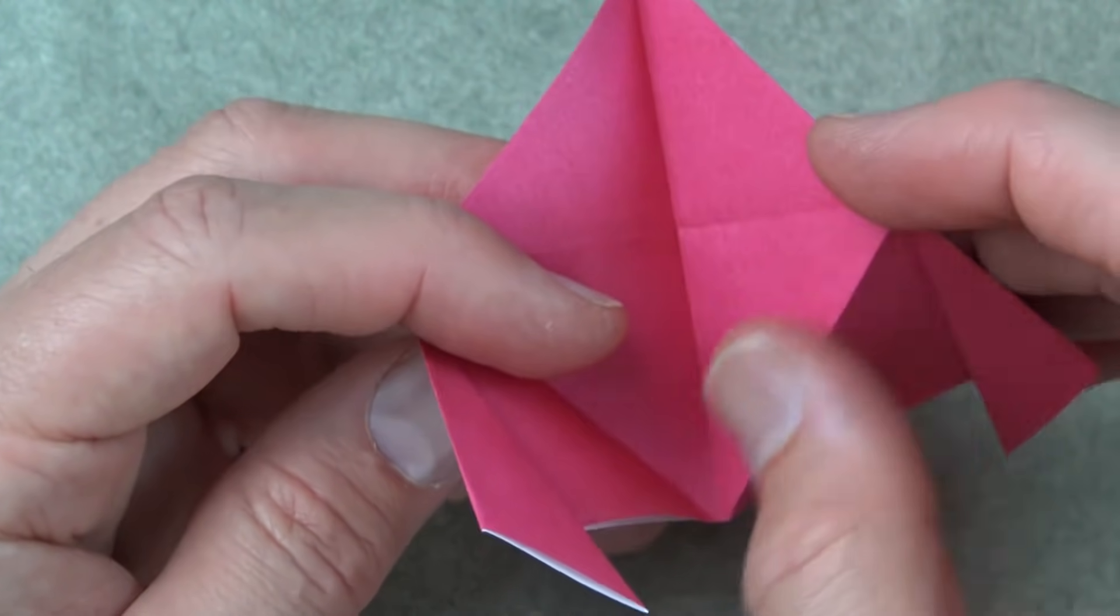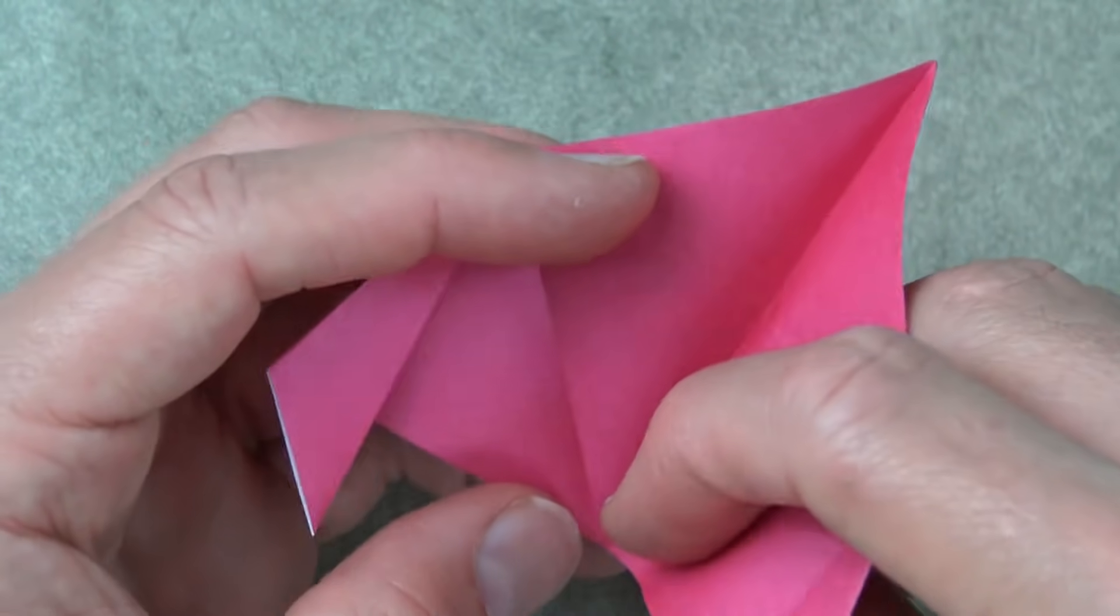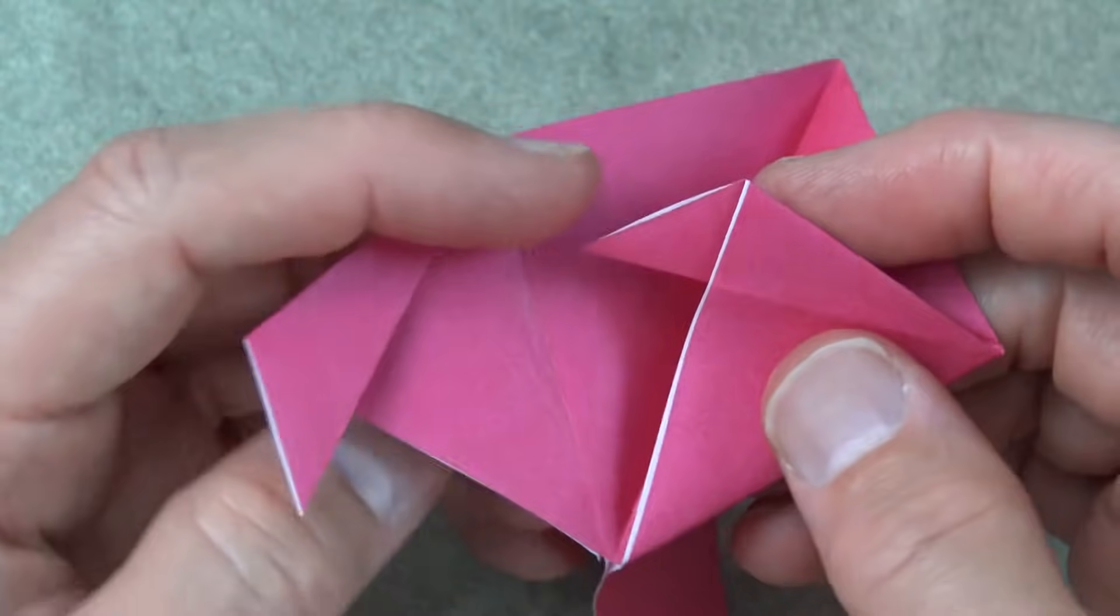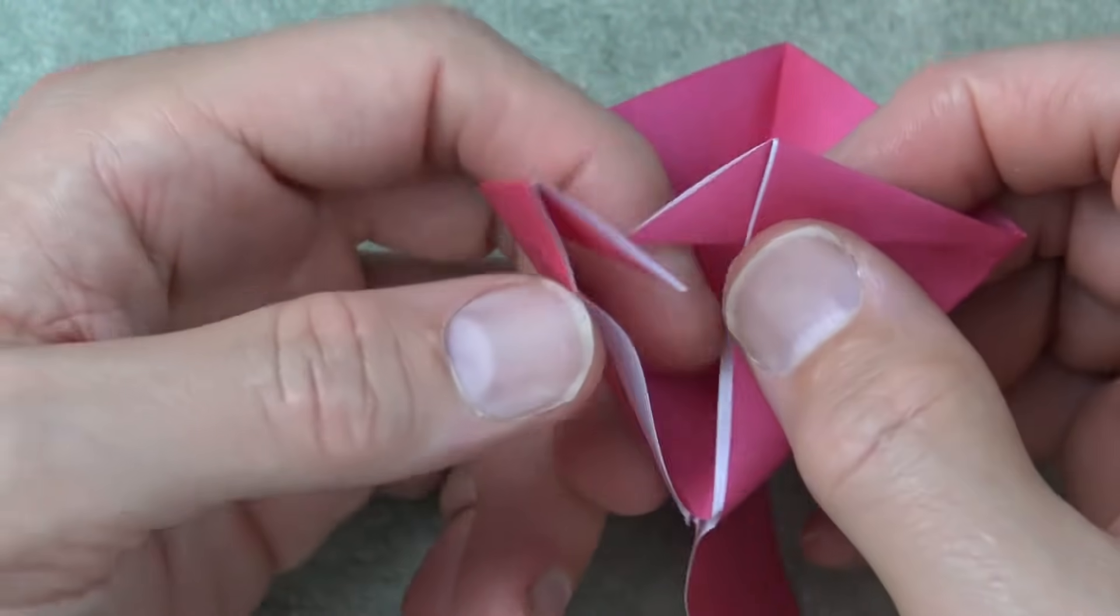Same on this side. This becomes a valley fold. Like that. So make both those folds.